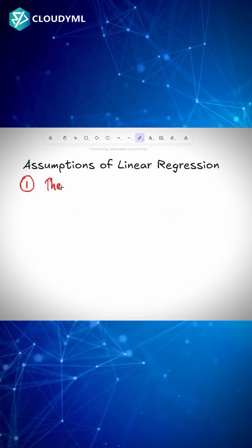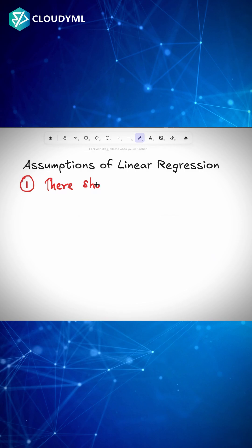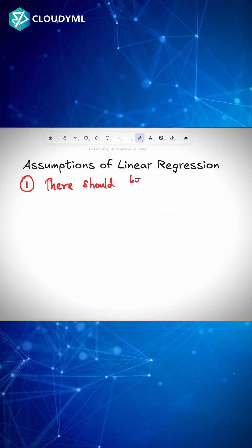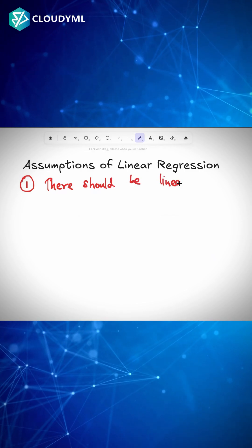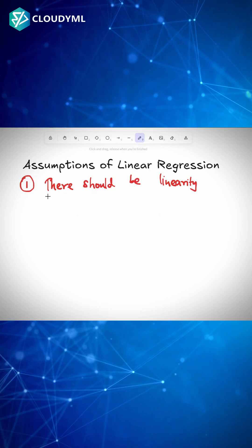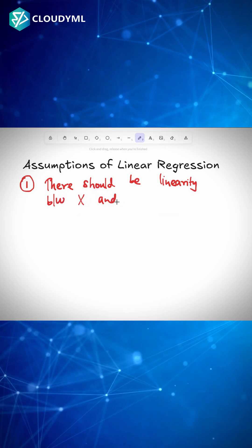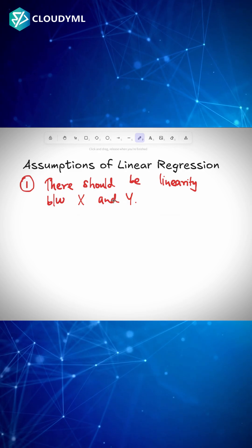So let's discuss what is the first assumption of linear regression. There should be linearity between your X and Y variable. There should always be a linearity present. That is the first assumption.